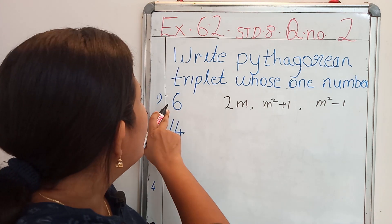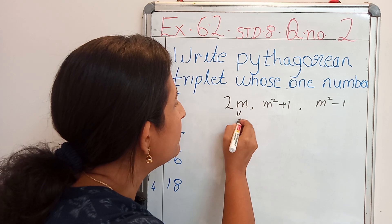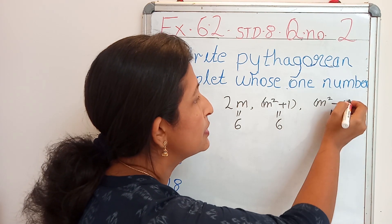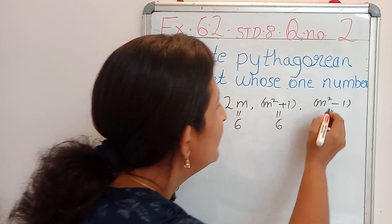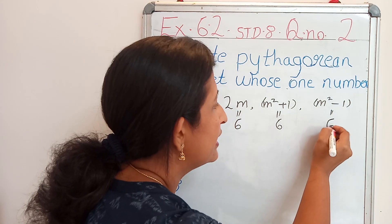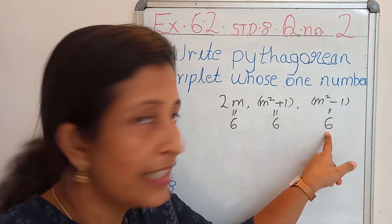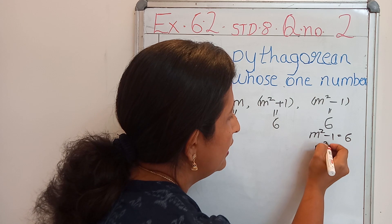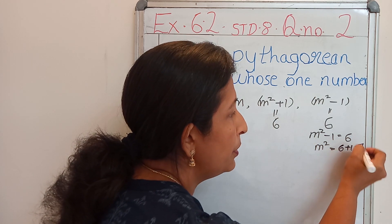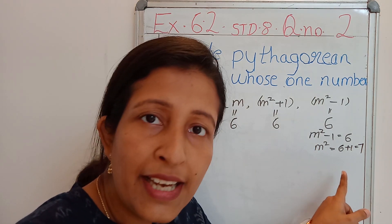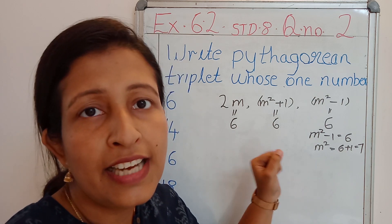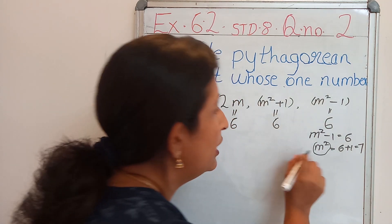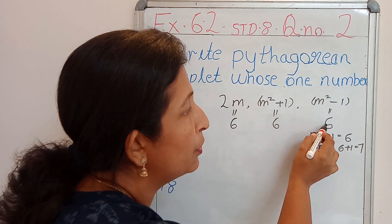They have given that 1 number is 6. Sometimes 2m may be 6, sometimes m square plus 1 may be 6, sometimes m square minus 1 may be 6. First check that m square minus 1 is 6: m square equals 6 plus 1 equals 7. Then m won't be a natural number. We should get m such that it is greater than 1 and a natural number. So m square minus 1 won't be 6.